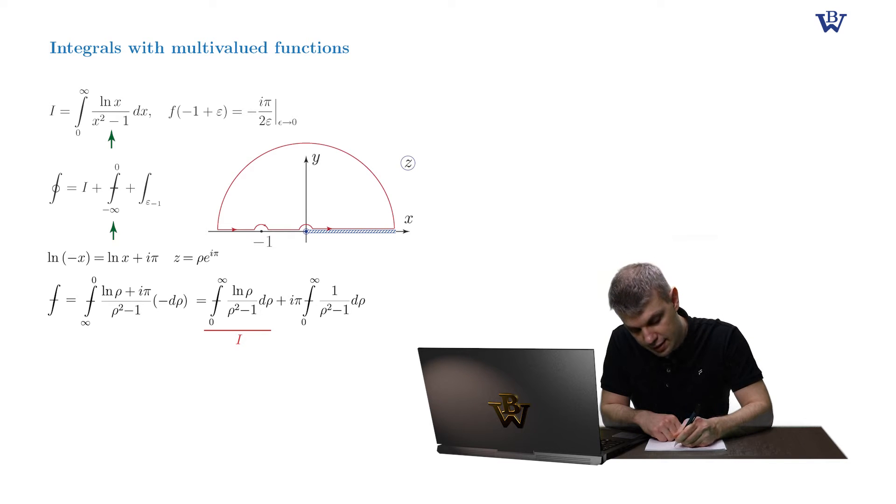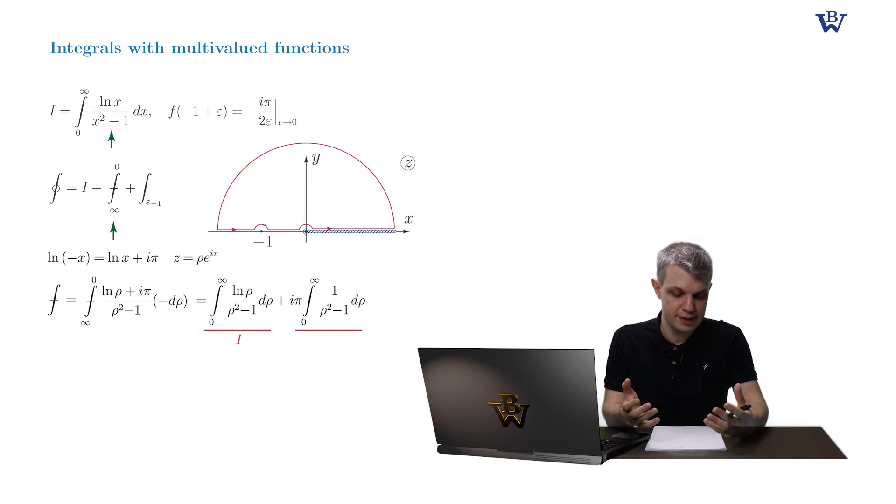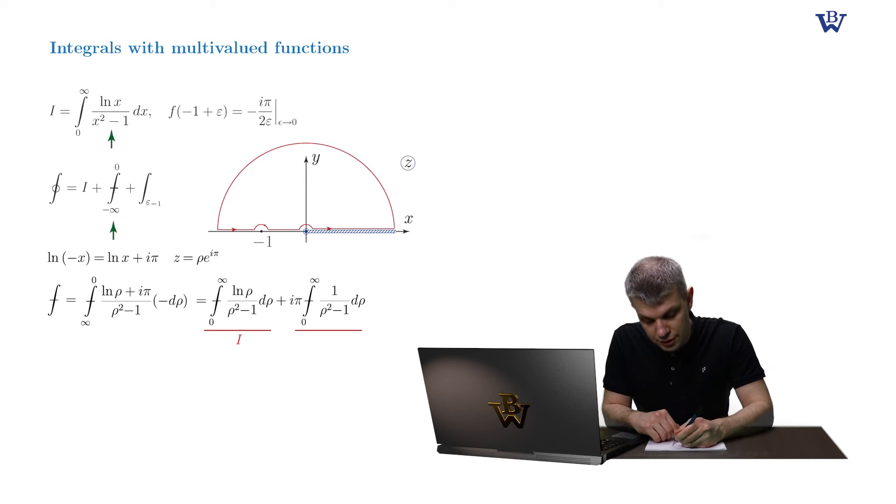On the other hand, the remainder term is indeed singular at point ρ equals one. So all the singularities are absorbed into the second remainder term. And by the way, the integrand of the second term is purely real, as well as the contour integration, since it runs along the real axis. So the whole integral is real and it's multiplied by iπ. The whole expression consists of the first part which is purely real and the remainder term which is purely imaginary.